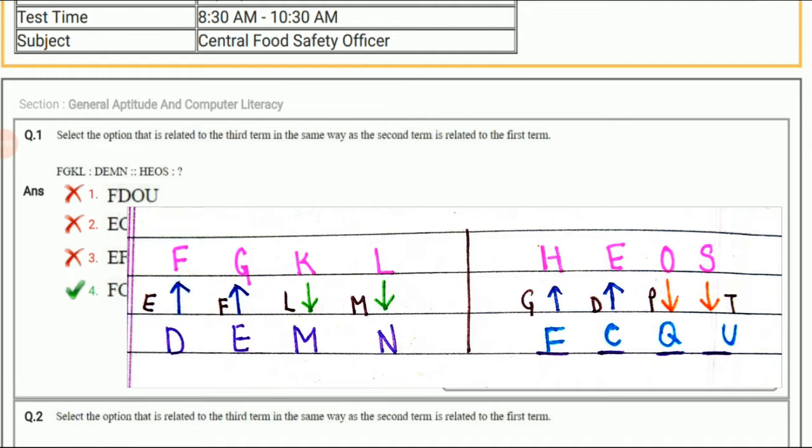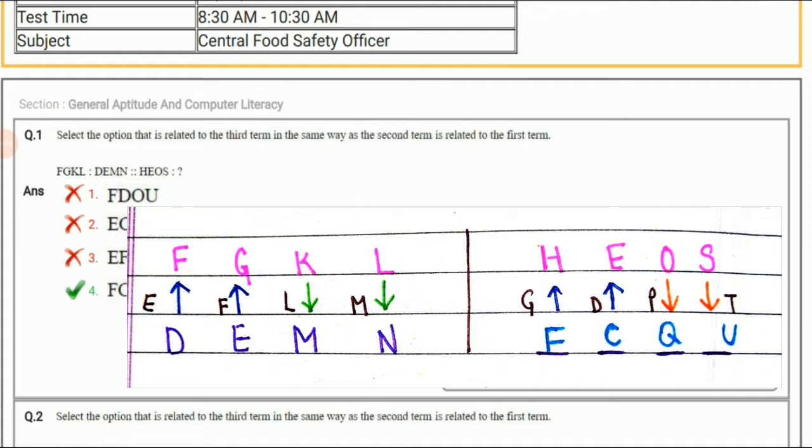If we follow the same pattern for our asked term H E O S, for the first two letters we have to find the second term. From the second term if we have F by leaving G we get to H. If we have C by leaving D we get to E. So the first two terms are F C. Here you can see that option 4 is the correct answer. For the last two letters we start from the first term. There is O by leaving P we reach Q, and S by leaving T we reach U. So the answer is option 4.